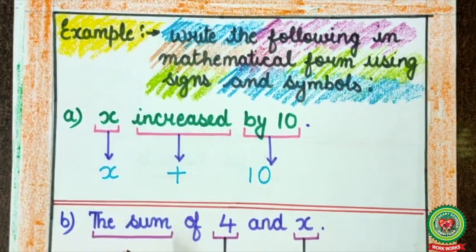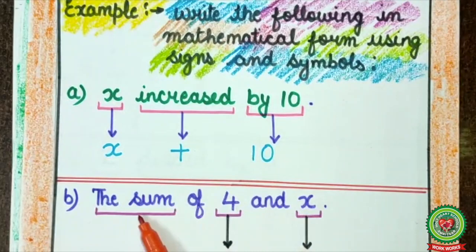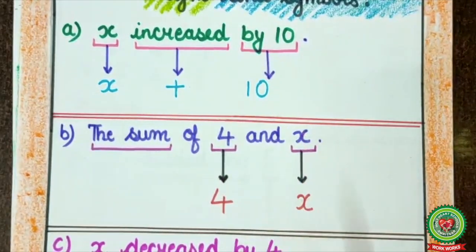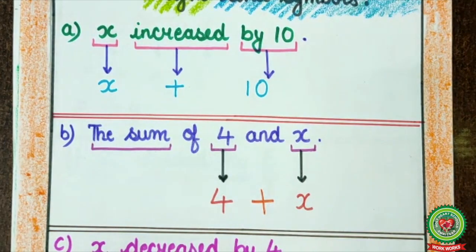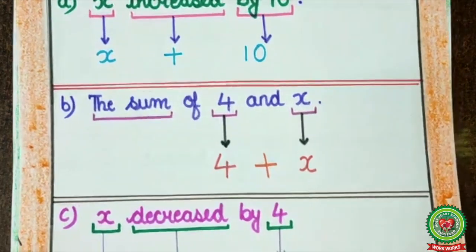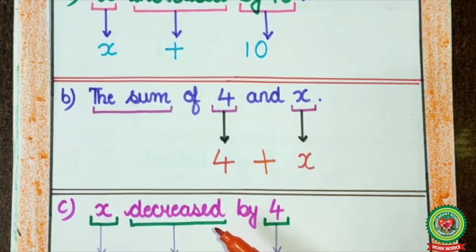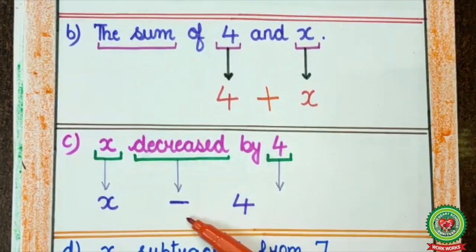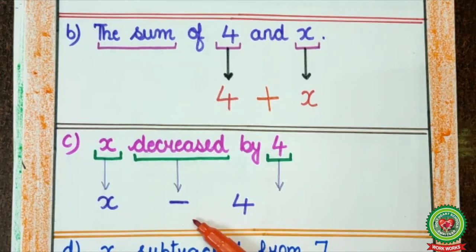Next example is the sum of 4 and X. Sum means plus. So, here we are having 4 and X. Which symbol will come in between? Plus. Here it comes: 4 plus X. Now, next example is X decreased by 4. What is the meaning of decreased? The symbol of minus. So, here X decreased implies minus, giving X minus 4.